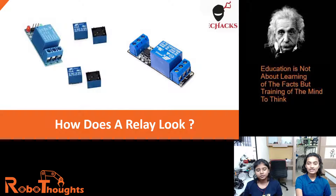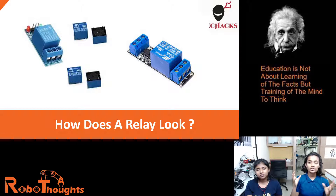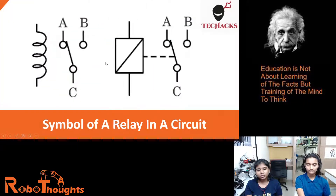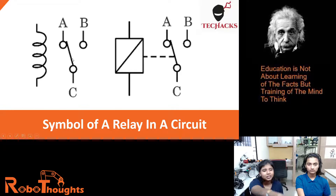This is how a relay looks — this is a relay sensor module which consists of transistors, capacitors, and resistors. This is a raw five-point relay. This is the symbol of a relay which you draw in a circuit diagram. Relays are basically switches — that is the coil, and this is the switch opening and closing from one point to another.